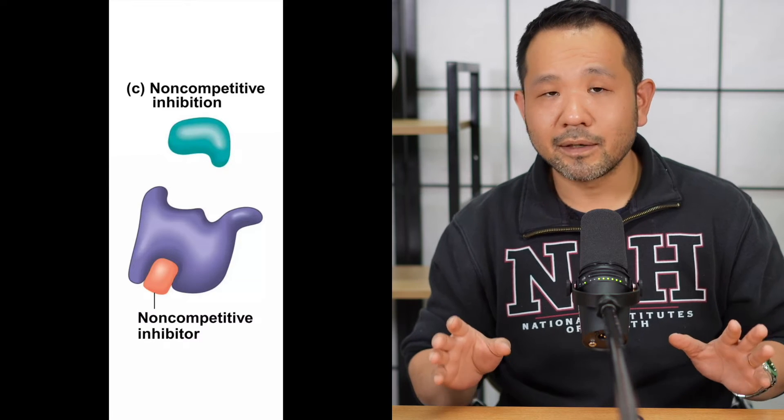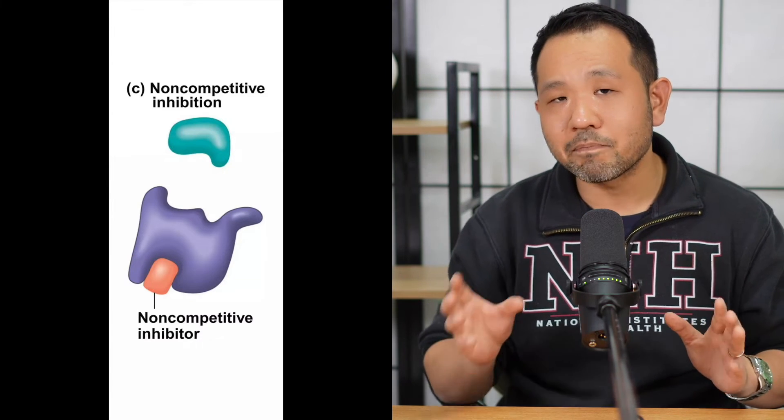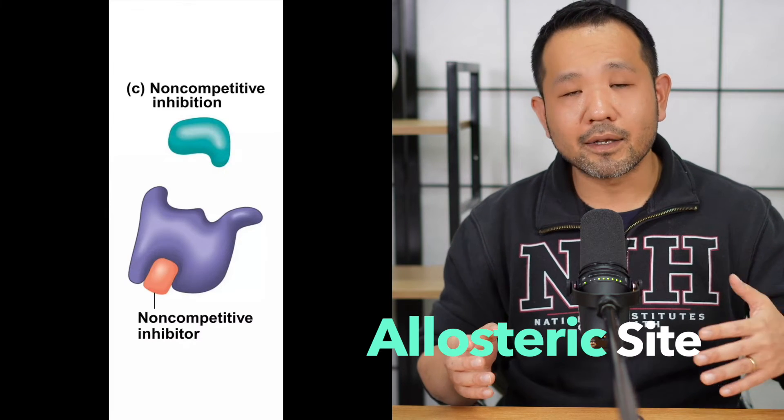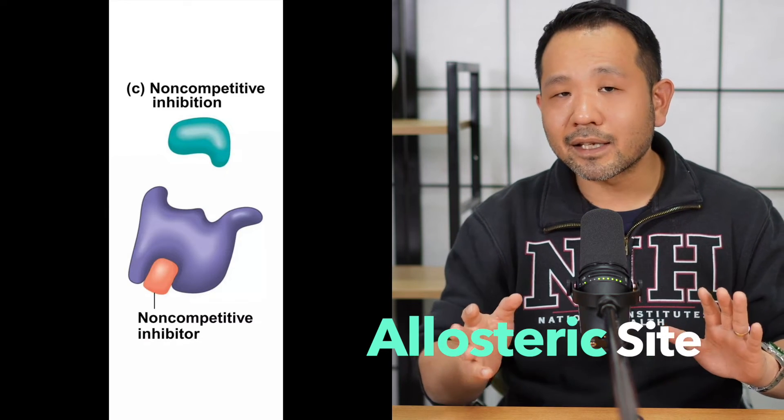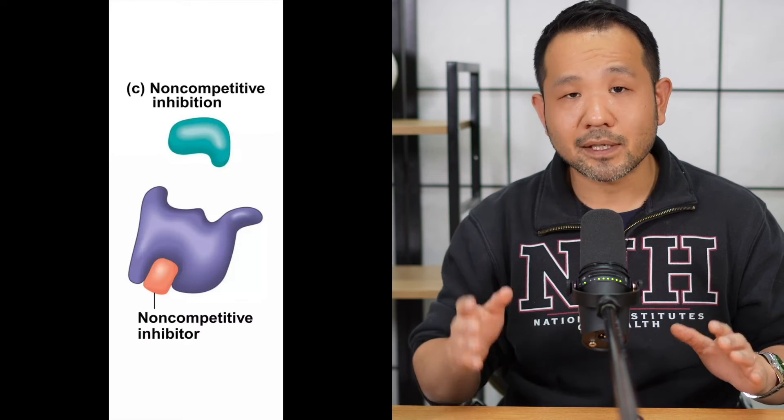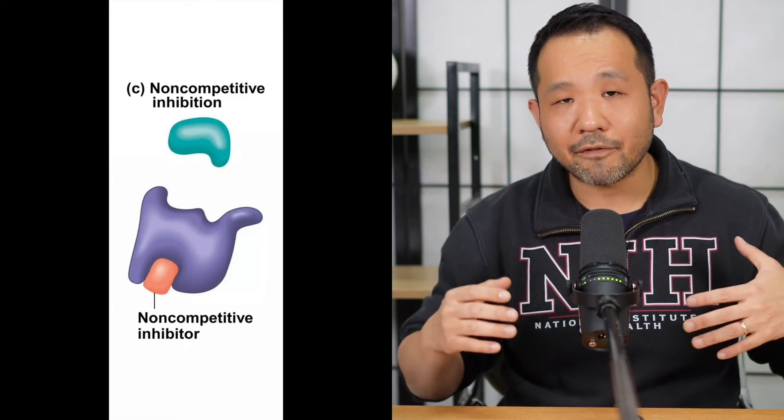Non-competitive inhibitors work very differently — they don't look like the substrate, but they bind to what we call an allosteric site on the enzyme. An allosteric site is away from the active site, but once bound to a non-competitive inhibitor it causes a conformational change that shuts down the active site — almost like a switch being turned off. These inhibitors are not competing for the active site but rather affecting a different site that ultimately influences the reaction rate.